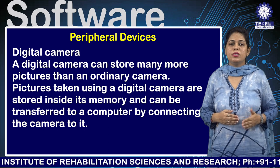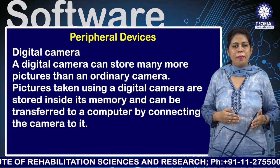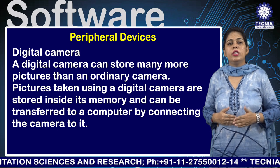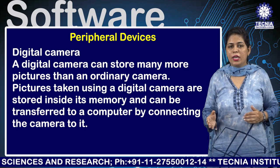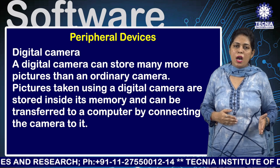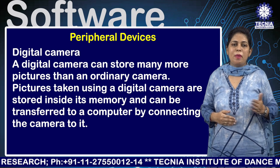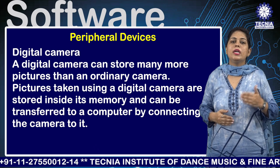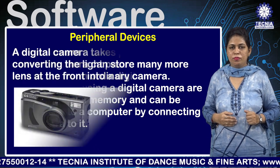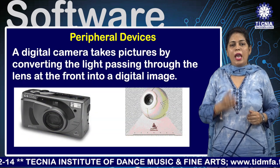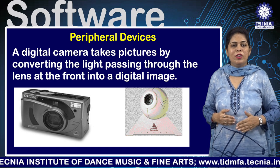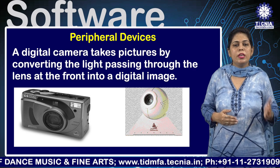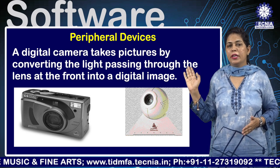A digital camera can store many more pictures than ordinary cameras. Pictures taken using a digital camera are stored inside its memory and can be transferred to a computer by connecting the camera to it. A digital camera takes pictures by converting the light passing through the lens into digital images, as shown in the diagram.